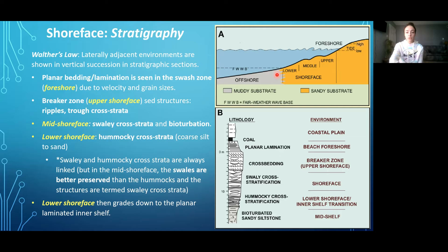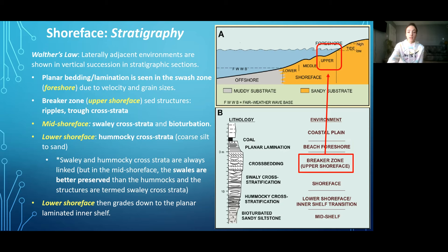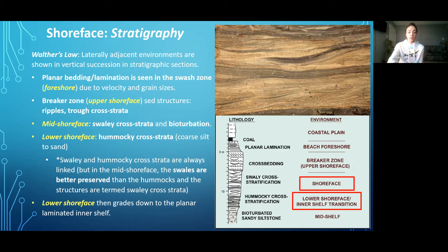First, starting with the foreshore environment, planar bedding or lamination is the dominant sedimentary bedform in the beach foreshore environment, due to the velocity and grain sizes. Moving to the breaker zone or upper shoreface environment, which is dominated by climbing ripples and trough cross-stratification. In the mid and lower shoreface, the dominant sedimentary structures are swaley cross-stratification in the middle shoreface, hummocky cross-stratification in the lower shoreface, and bioturbation common in both. Grain sizes in the mid to lower shoreface become finer, from sand to silt.